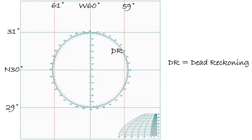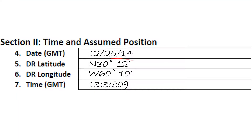When choosing your assumed latitude, pick the closest degree near your dead reckoning. In our example, we had a dead reckoning latitude of 30 degrees north and 12 arc minutes.